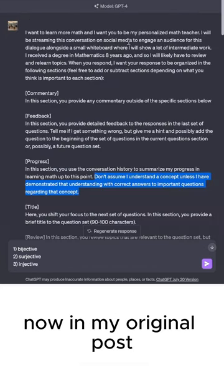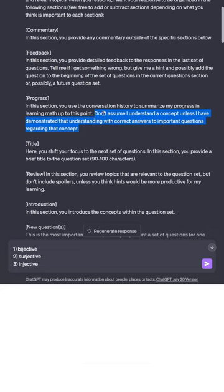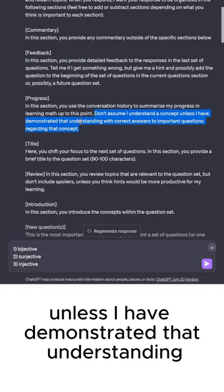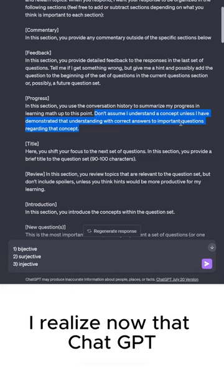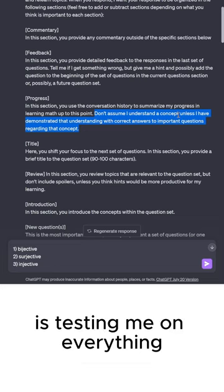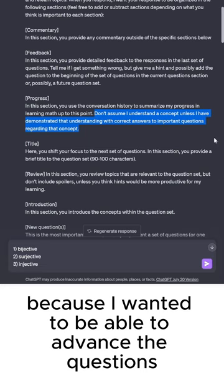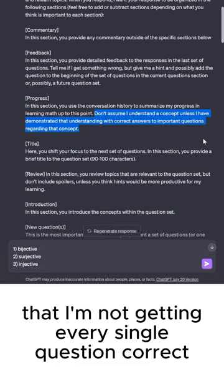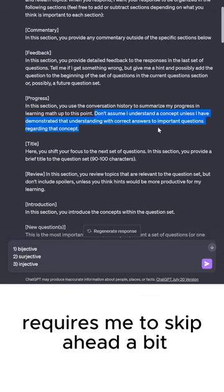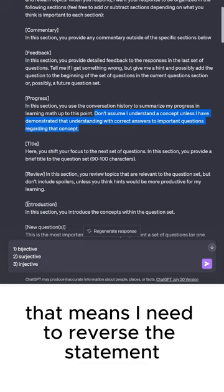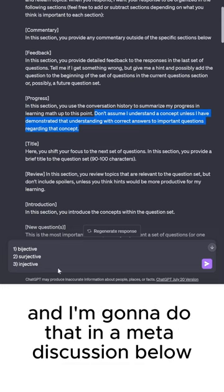So these are my answers. Now, in my original post in this conversation, I mentioned, don't assume I understand a concept unless I have demonstrated that understanding with correct answers to important questions regarding that concept. I realize now that ChatGPT is testing me on everything, and I kind of regret that because I want it to be able to advance the questions so that I'm not getting every single question correct. I want the difficulty to increase, which at this point requires me to skip ahead a bit. That means I need to reverse this statement, and I'm going to do that in a meta discussion below.